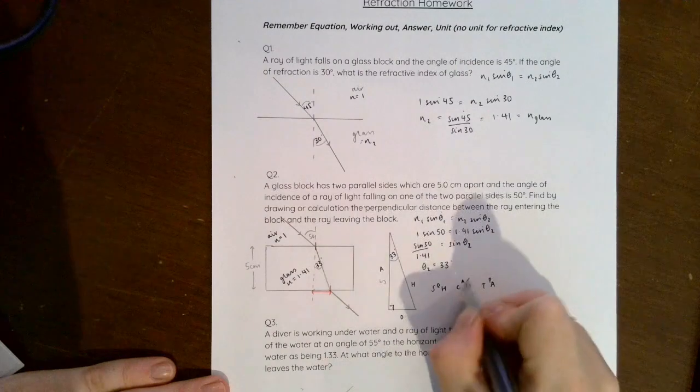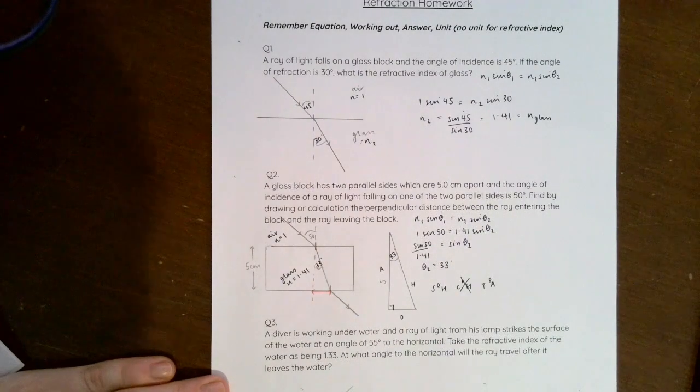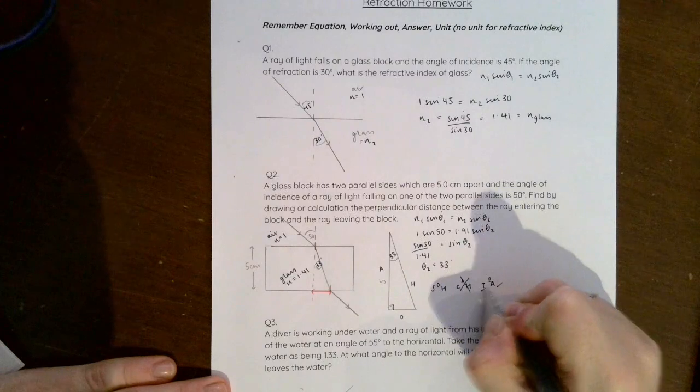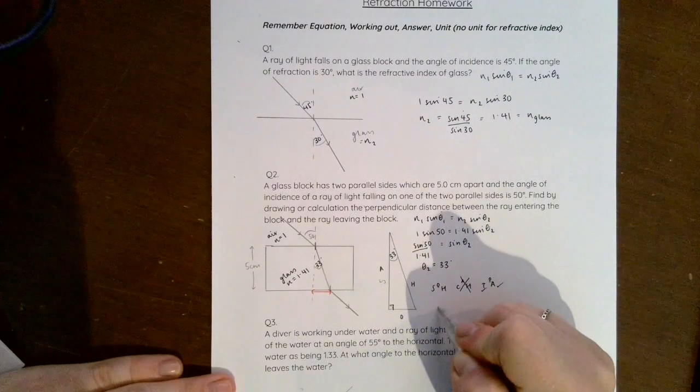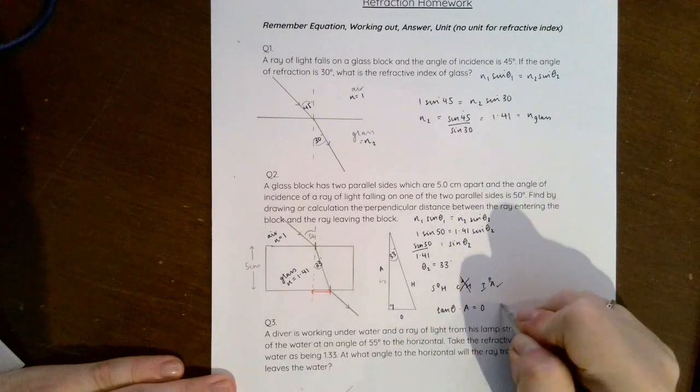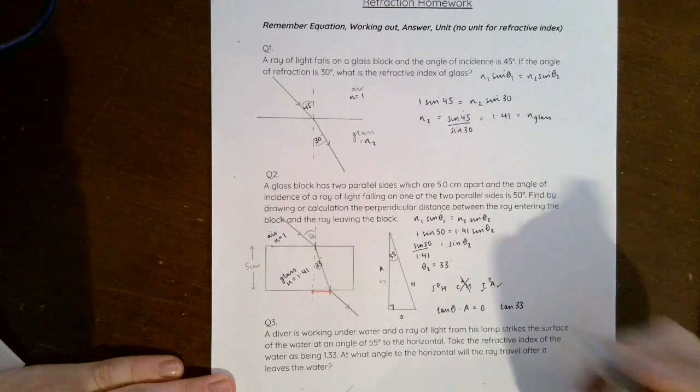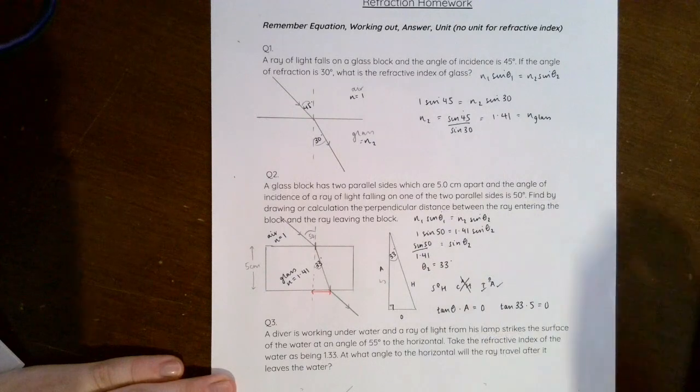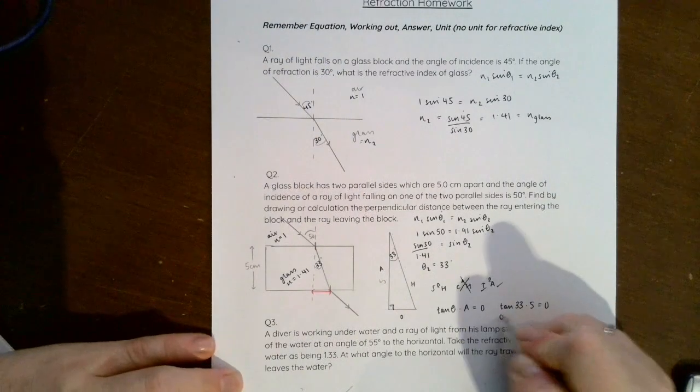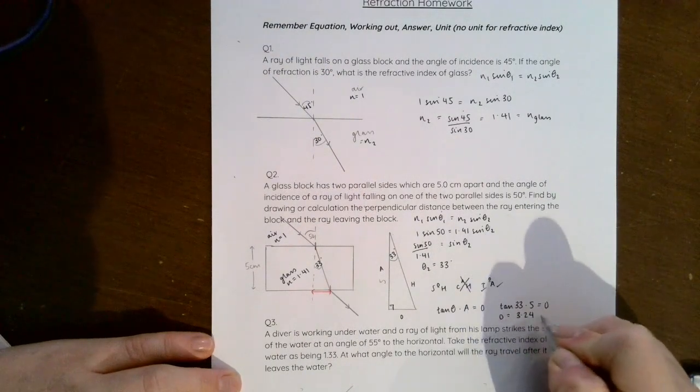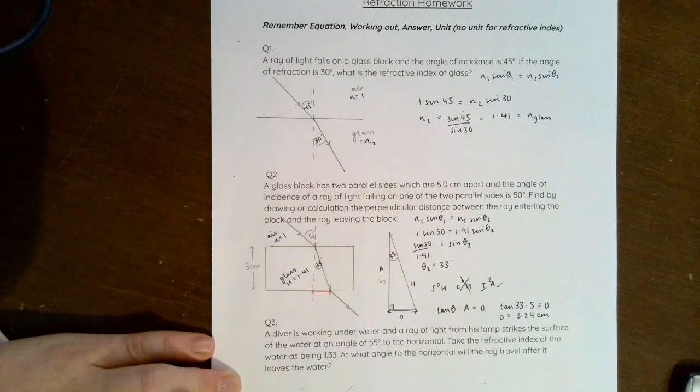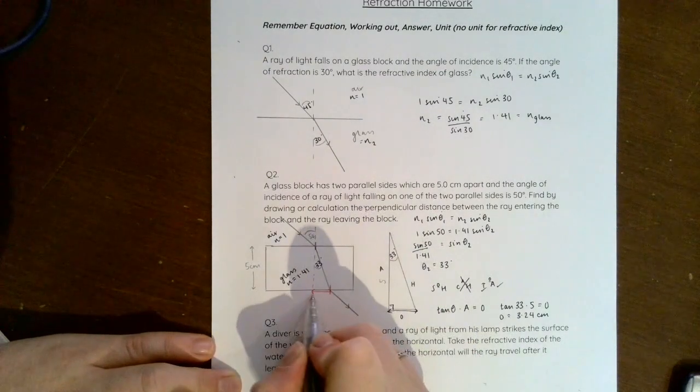We definitely have the angle that we're after and we want to know O, so we're not going to use this one. And so we can say we know the value of the adjacent and we know the angle, so we can say tan θ multiplied by a must be O. And in this case I'm going to say tan 33 times 5, and therefore O equals 3.24 cm.